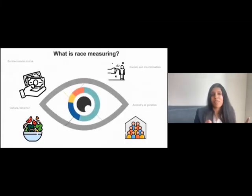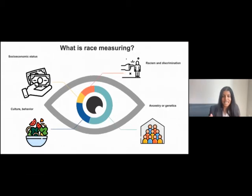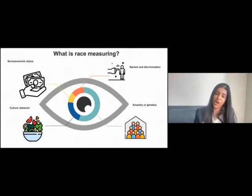When we see race embedded as a variable in a study, we should ask ourselves what are we really measuring with race? Are we measuring socioeconomic status? This is a crude marker. Are we measuring ancestry or genetics? The answer is no. Are we measuring culture and behavior? Absolutely not. Are we measuring experiences of racism and discrimination? Perhaps, but we need better ways.